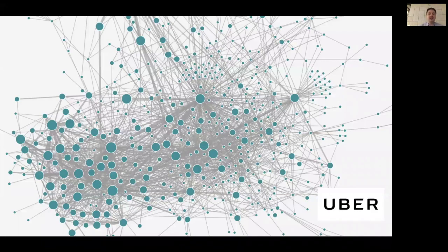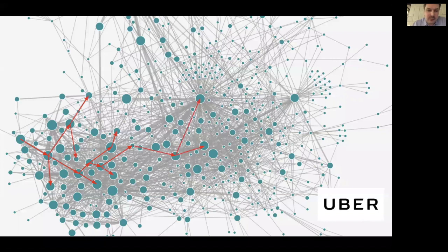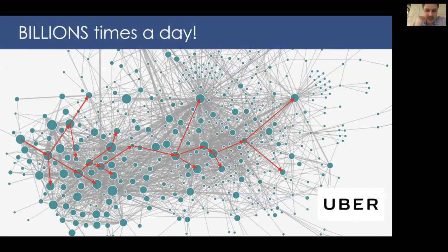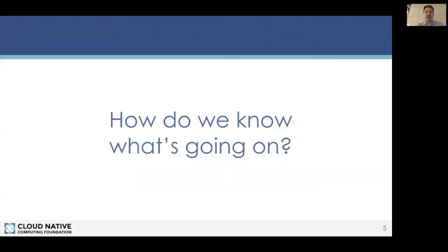This is a snapshot of the service dependency graph that Jaeger generates for Uber. When you're using the Uber app to order a car, what happens inside this microservices-based architecture is that every request hits dozens of different services and maybe hundreds of instances. It's very typical for us to get a trace which contains maybe 200 service calls within a single transaction, and that happens billions of times a day.